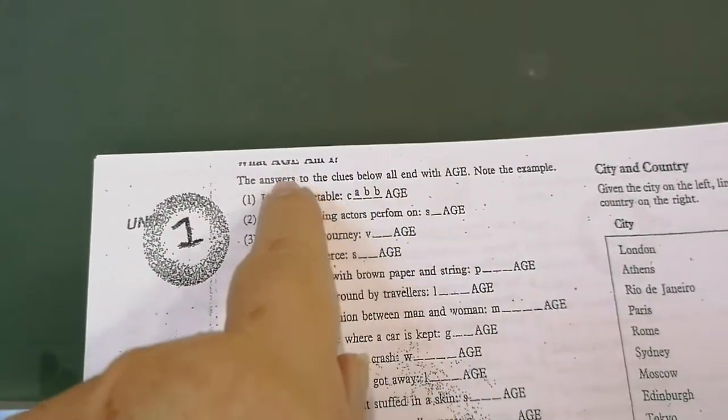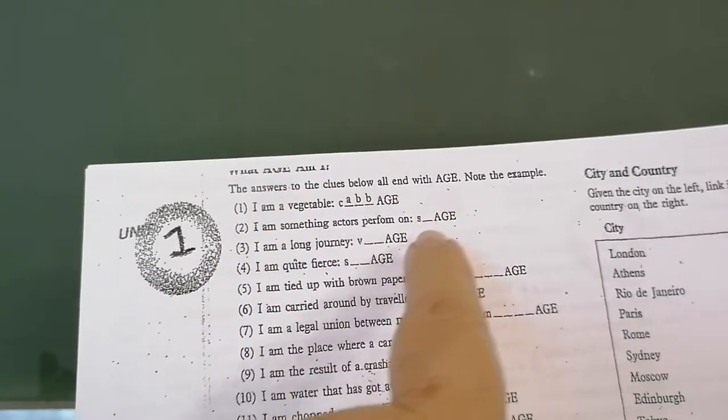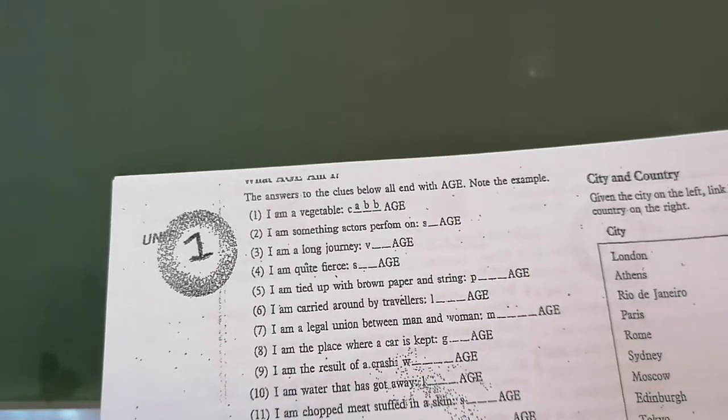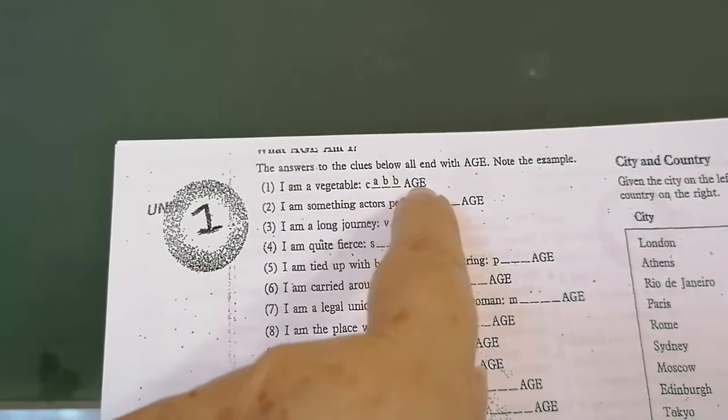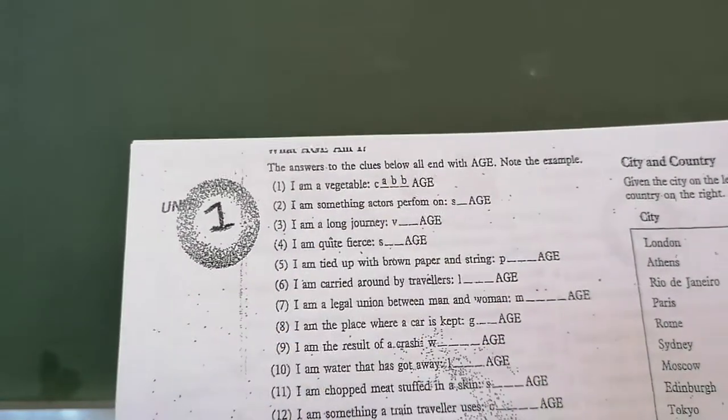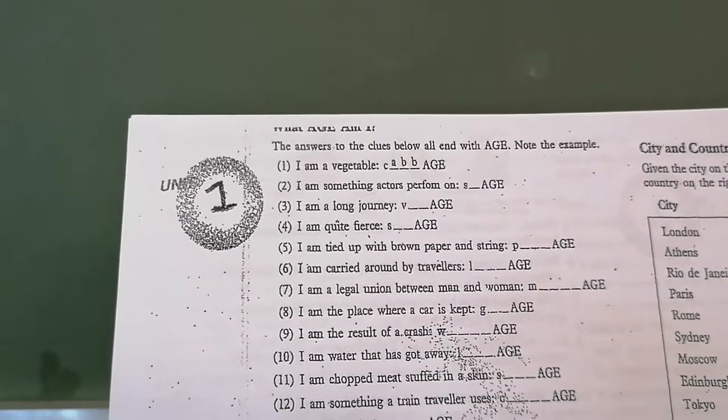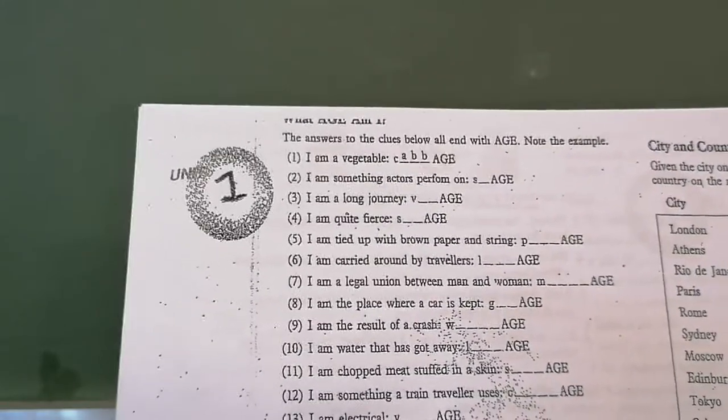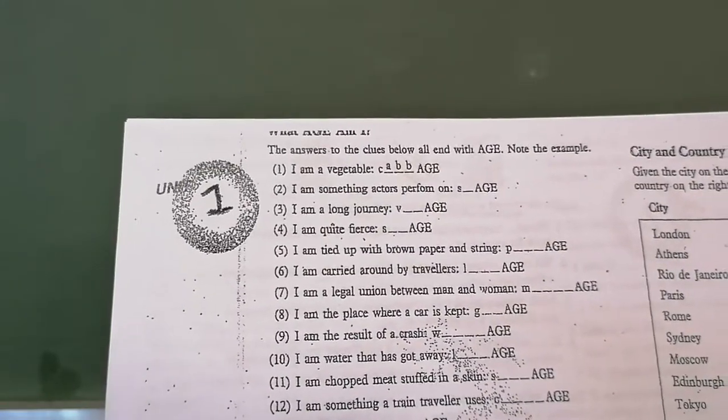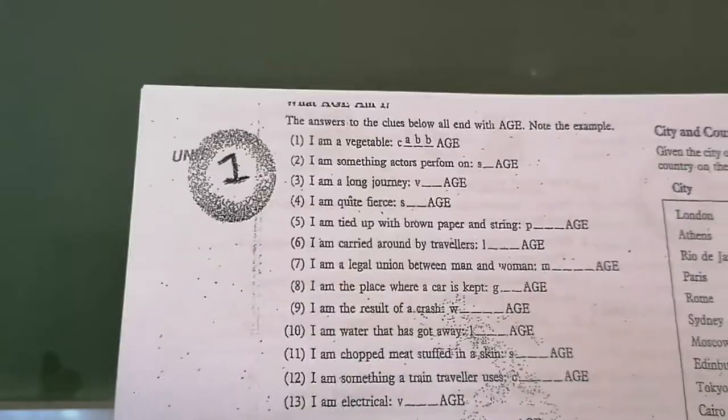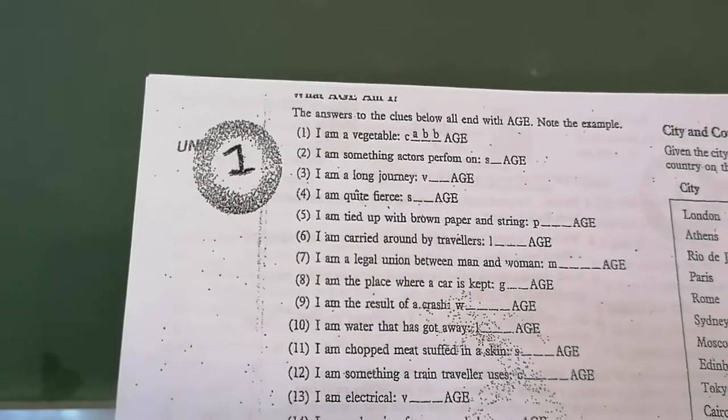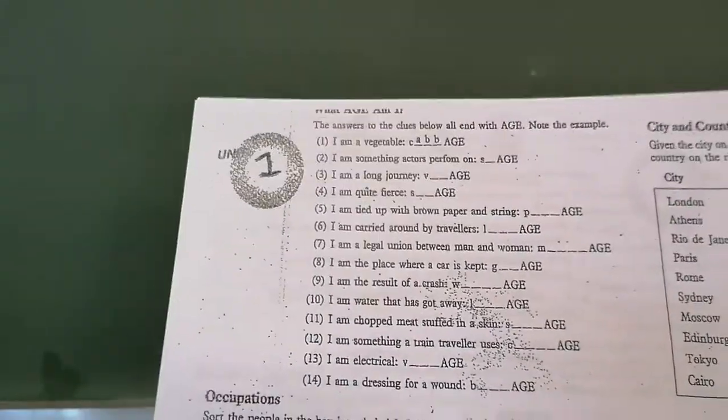I ask you to add A-G-E at the end of every word, and then you have to say I'm a vegetable, and it ends with A-G-E. So you put in cabbage. I'm something actors perform on, where do actors perform, on a stage. Number 7, a legal union between man and woman is a marriage, so that's very easy.